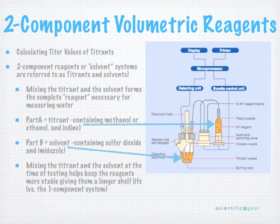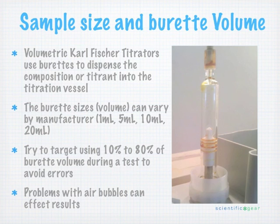Can we jump into sample size on the volumetric? With the volumetric system, we need to be concerned about sample size. The instrument manufacturers will tell us that for every titration we perform, we should design our analysis so that our sample consumes approximately 10% to 80% of whatever burette volume that instrument has. Our recommendation has always been to shoot for approximately 50%. If we've misjudged the water content of our sample or there's some variability, hopefully we'll always fall within that 10% to 80% window. We never want the instrument to use less than 10% because then it's out of the optimum operating range for the burette system.